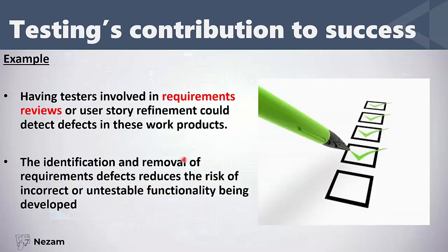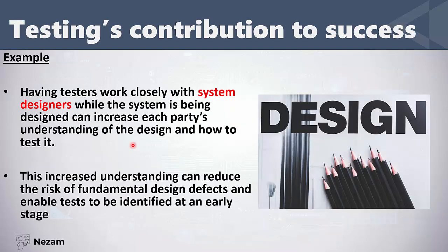Let's take some examples of how testing contributes to success. If testers are involved in requirements reviews — for example, the product owner or business analyst wrote the requirements and we reviewed them, which is static testing — this identification and removal of requirements defects reduces the risk of incorrect functionality in the software.